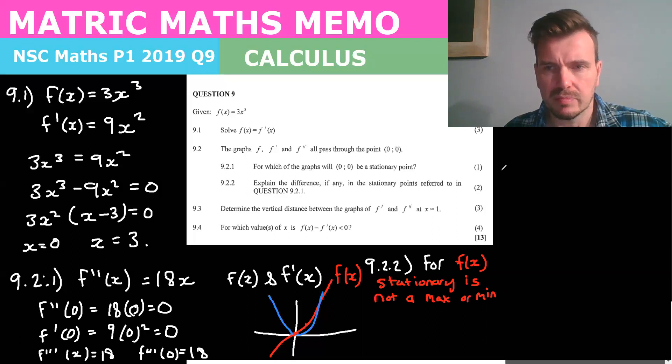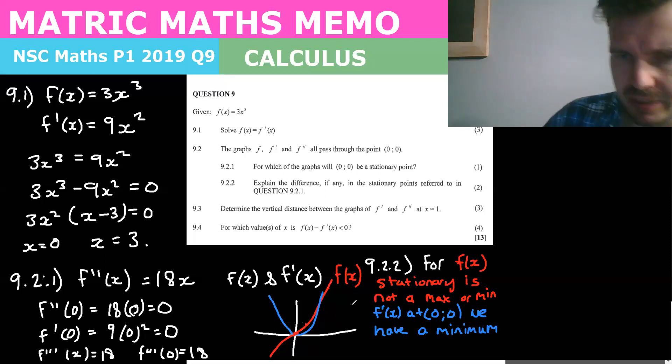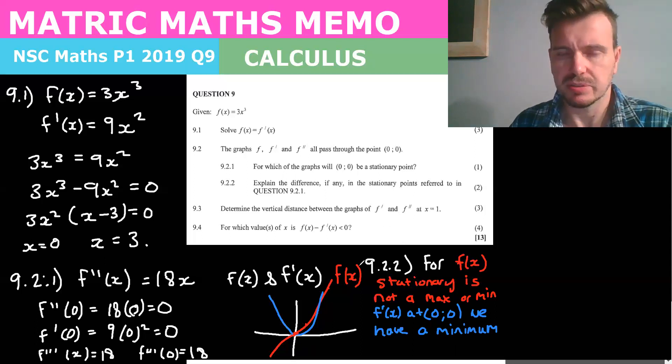Whereas for f dash of x at zero we have a minimum. And I think that if you just draw that diagram in there as well that is quite a nice way to explain it too.